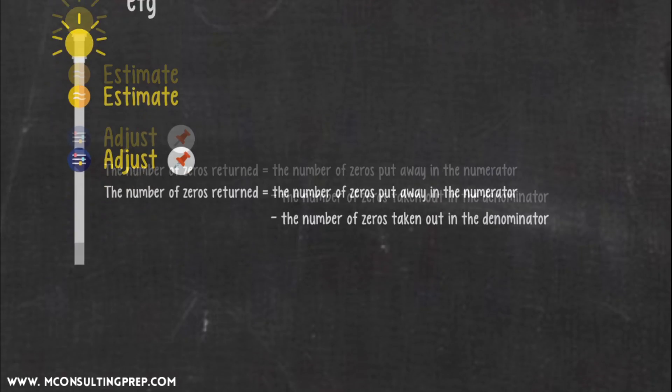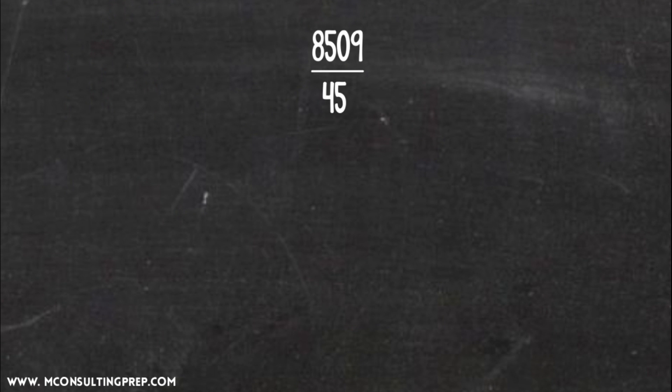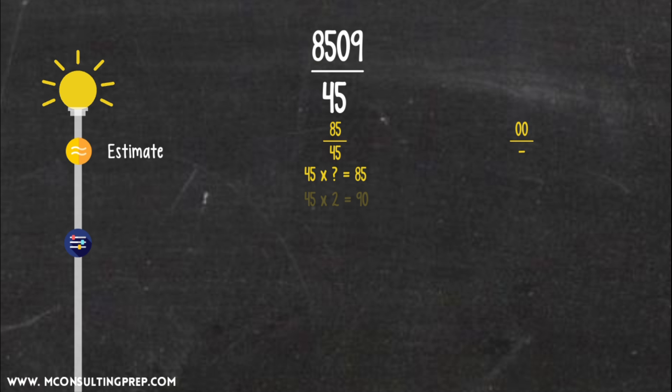Okay, let's look at an example. 8,509 divided by 45. Step 1. Estimate. We'll have a nice version of 85 divided by 45, taking out two zeros in the numerator only. There's no need to round as 85 and 45 have already been whole numbers. We then turn division into multiplication and find x. 45 times x equals 85. 45 times 2 equals 90. Thus, x is approximately 2. Step 2. Adjust. As 90 is slightly higher than 85, we need to adjust it down. Turn 2 into 1.9. Then return two zeros you have taken out in step 1. We get the answer of 190. The correct answer is 189.089.